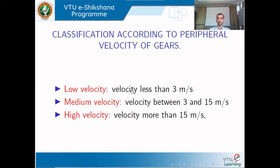To summarize the classification by shaft position: when shafts are parallel, use spur, helical, or double helical gears; when shafts are intersecting, use bevel gears; and when shafts are neither intersecting nor parallel, use spiral gears.